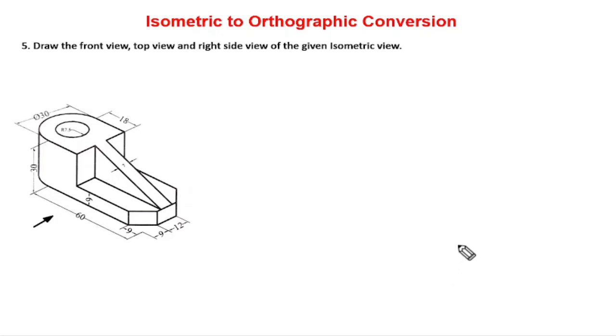Next one. Draw the front view, top view, and right side view of the given isometric view. If you observe this one, I can tell that it is an easy problem only. This is the right side view, which should be drawn on the left side of the front view.